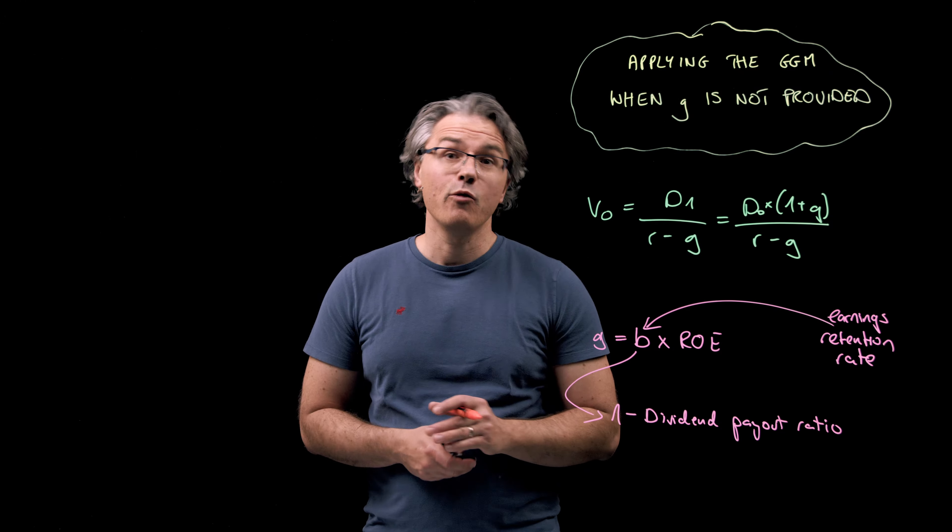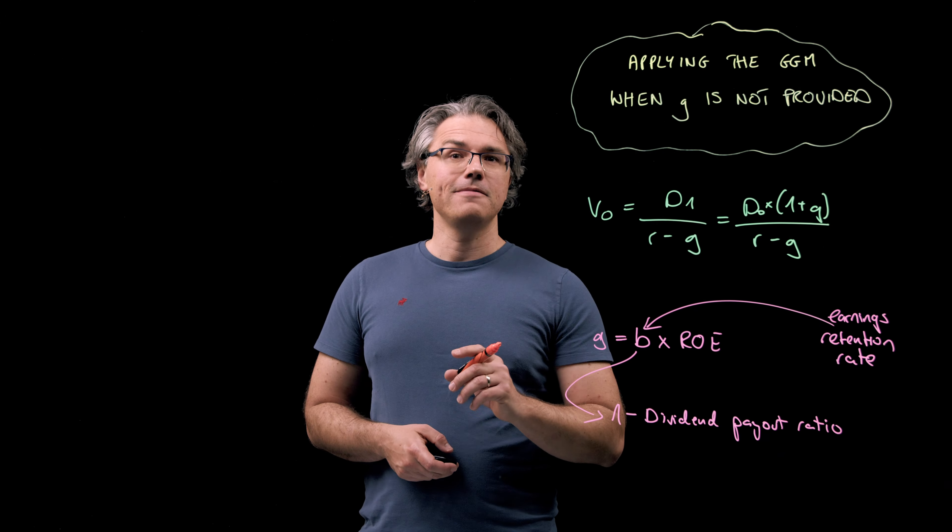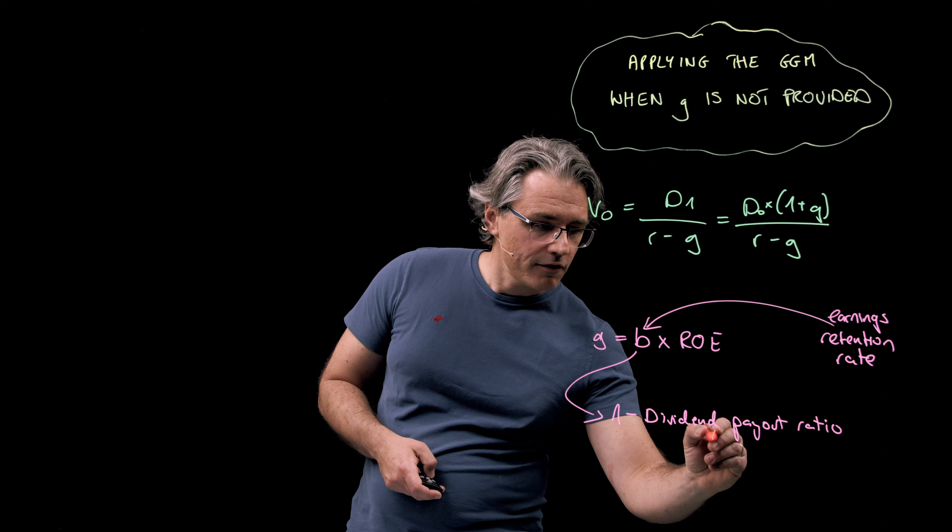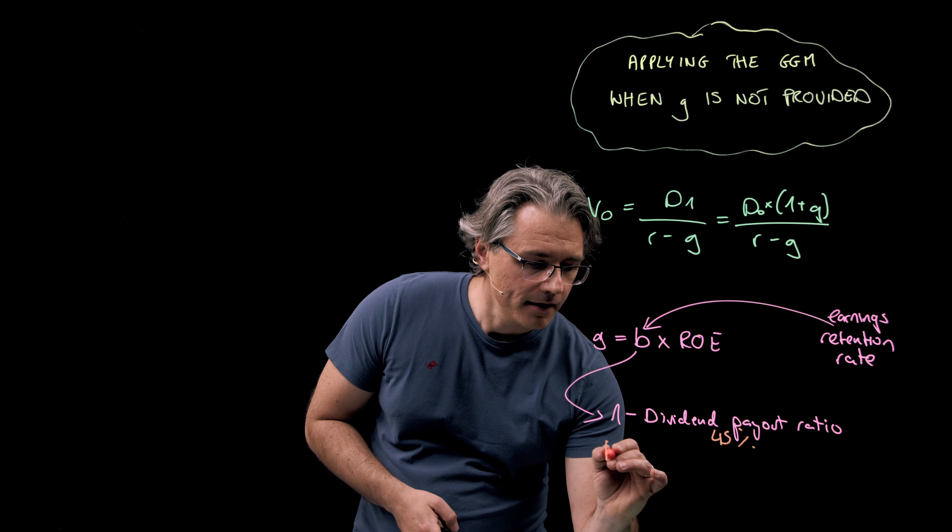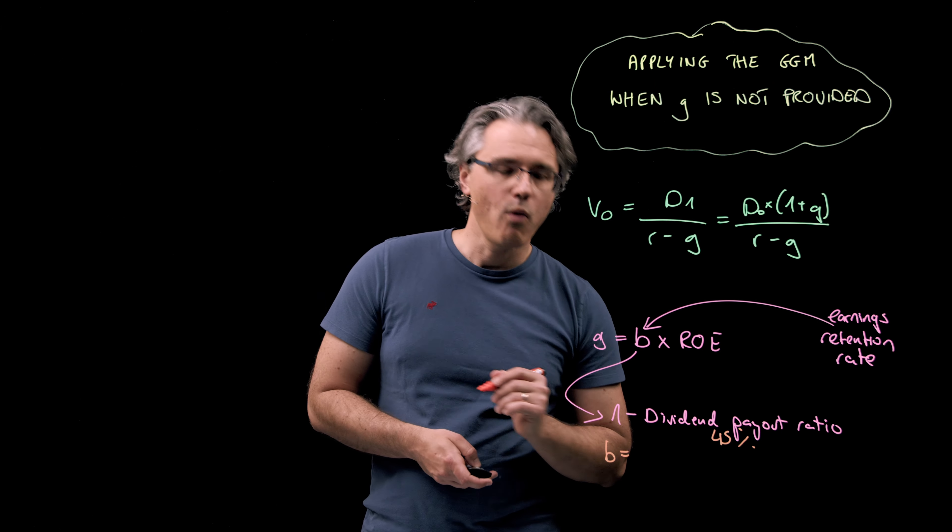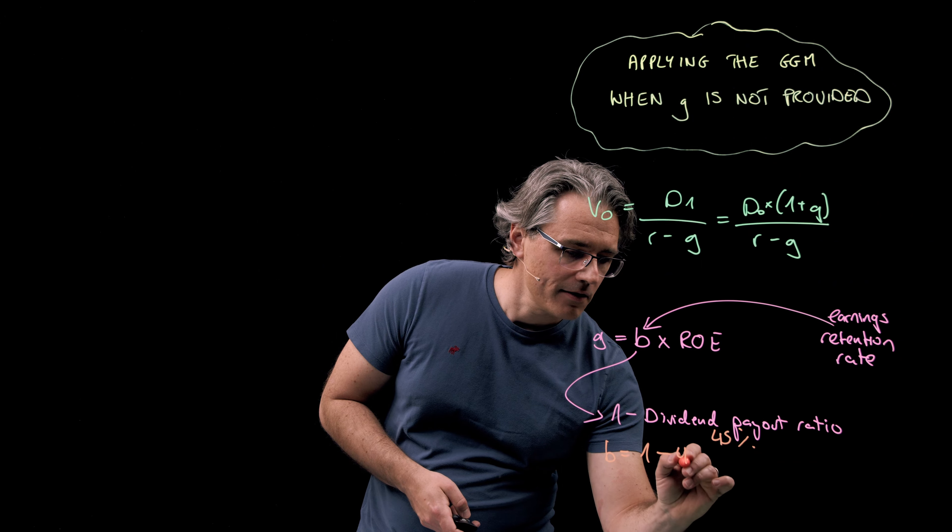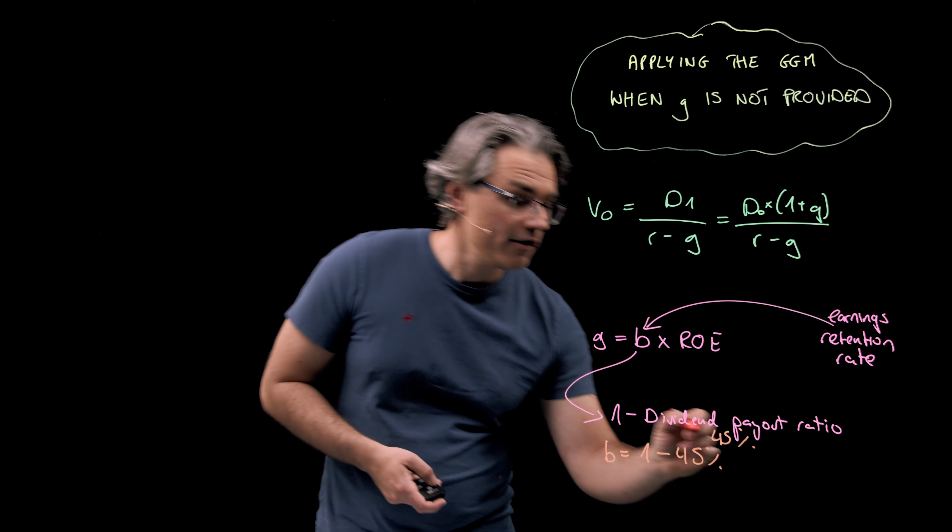And in this question, we are told that the company has a policy of paying a dividend equal to 45% of its net earnings. So the dividend payout ratio is 45%, making B, the earnings retention rate, equal to one minus 45% or 55%.